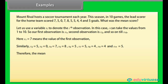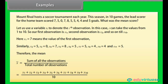Therefore, the mean x̄ is equal to the sum of all the observations divided by the total number of observations, which is (x₁ + x₂ + x₃ + x₄ + x₅ + x₆ + x₇ + x₈ + x₉ + x₁₀) / 10.